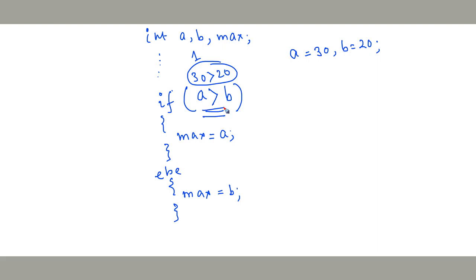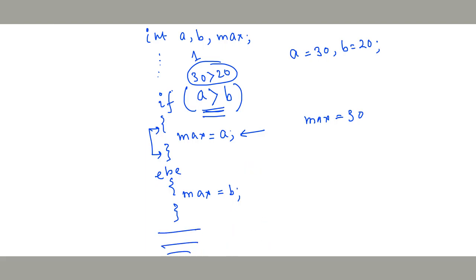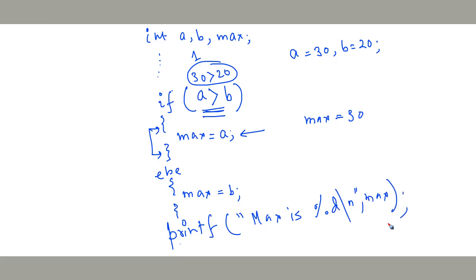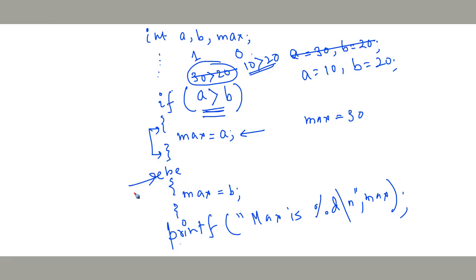Now you can trace through the code manually. Say a is 30 and b is 20. In that case, 30 greater than 20 is true — this evaluation returns 1. Since the result of the condition is true, whatever we have written under the if-block is going to be executed. So max is assigned with a, therefore max is 30, and it doesn't go to the else part at all. If we write printf maximum is %d max, it's going to print 30.